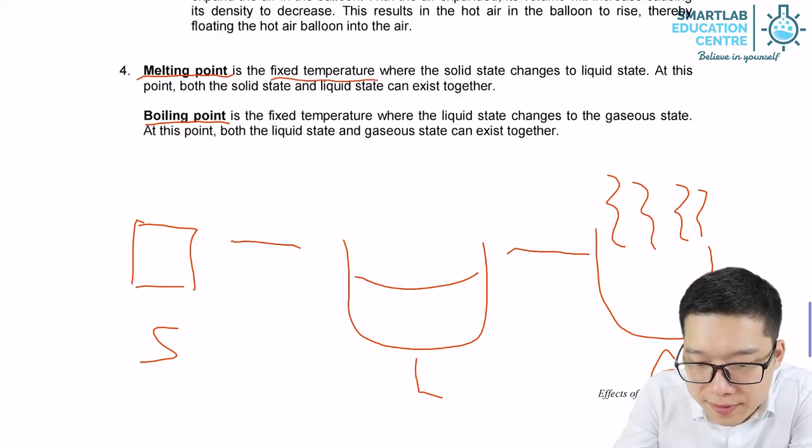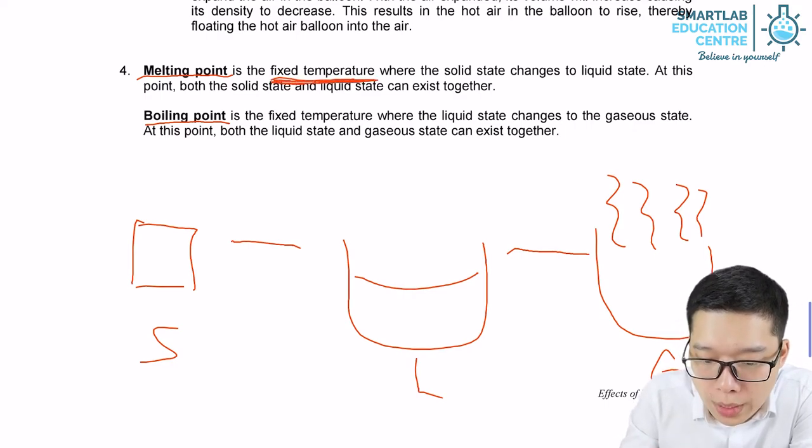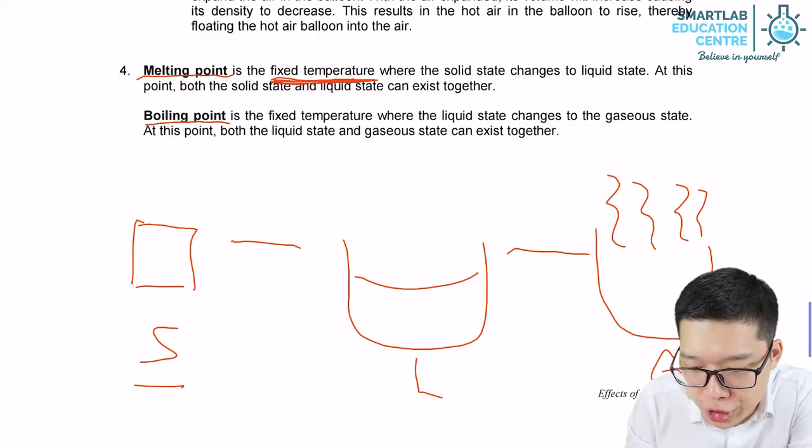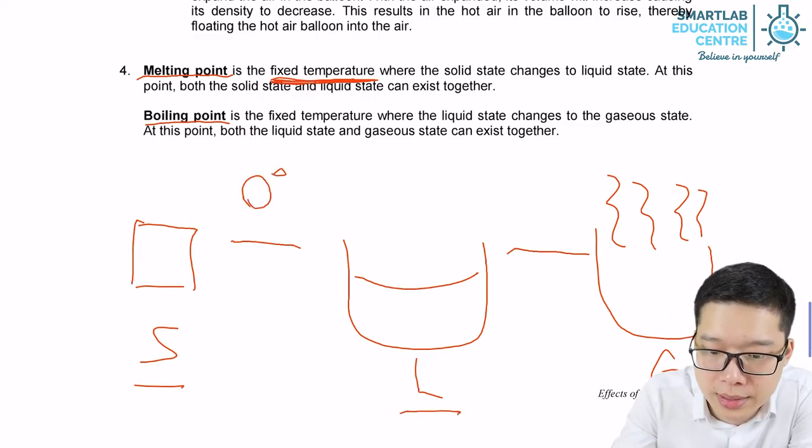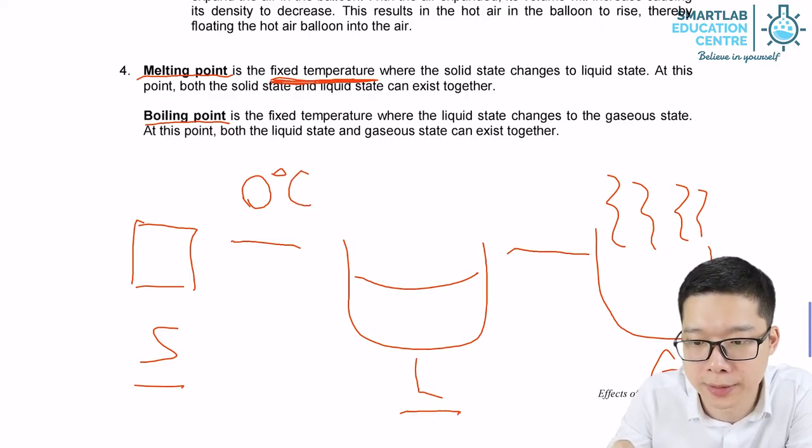So melting point is a fixed temperature when the solid state changes to liquid state. For water, we know that is 0 degrees Celsius. It's a fixed temperature for ice to melt.